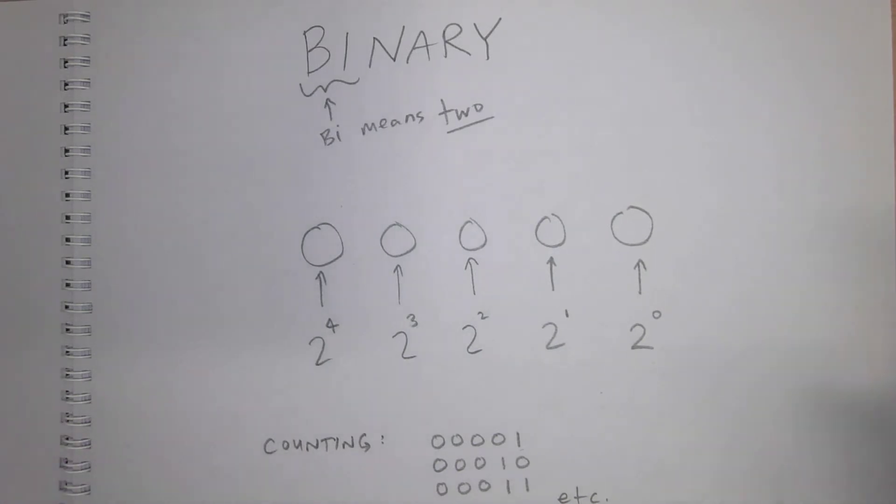Binary, it's the same, except the only difference is instead of there being 10 possibilities, right? 0, 1, 2, 3, 4, 5, 6, 7, 8, 9, there are only 2 possibilities. 0 and then 1.